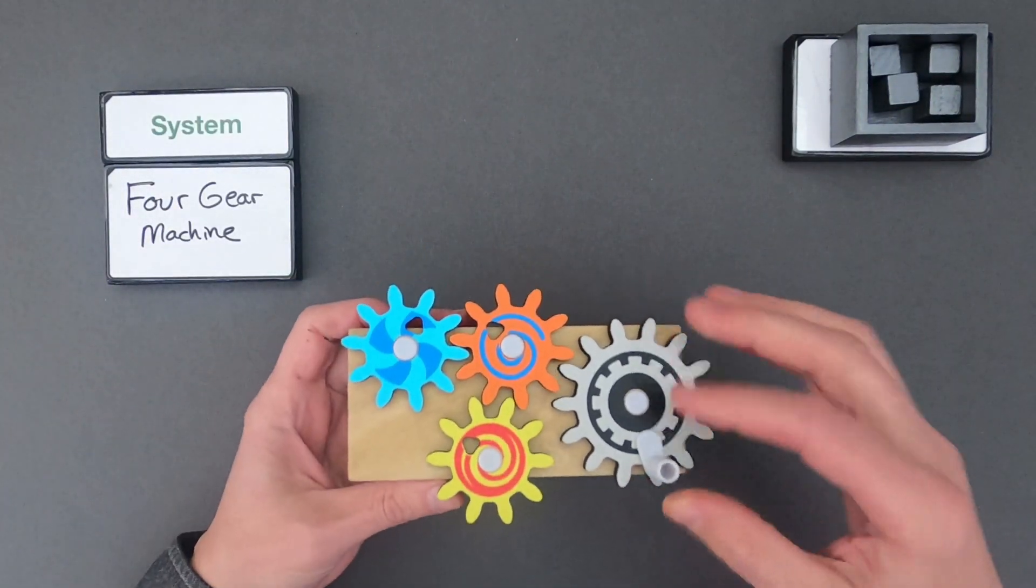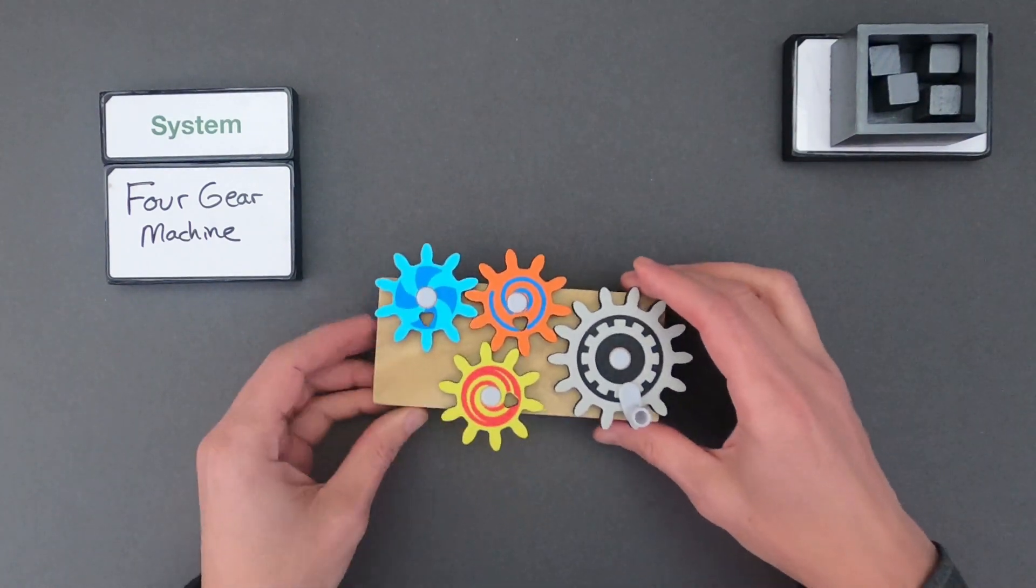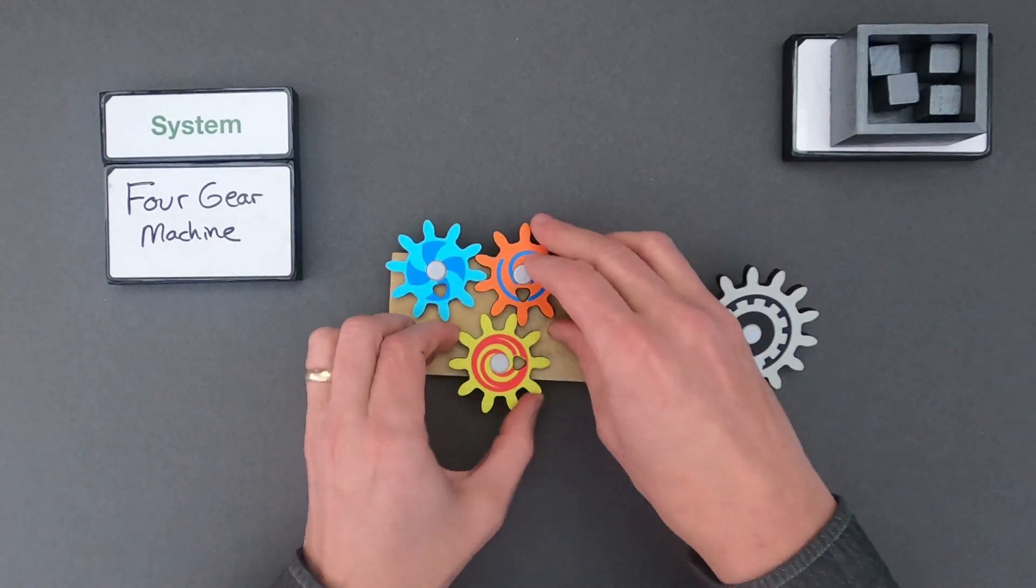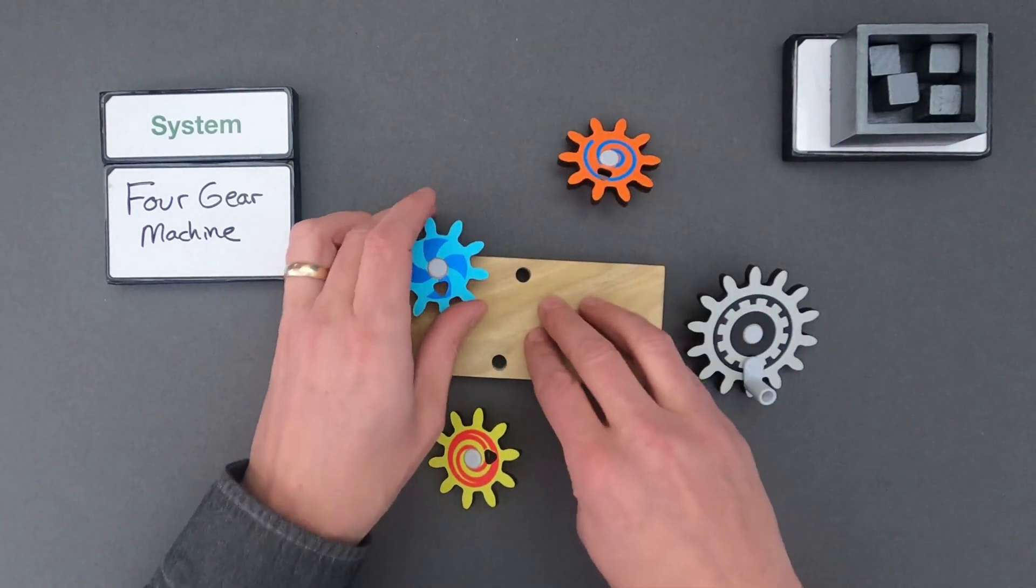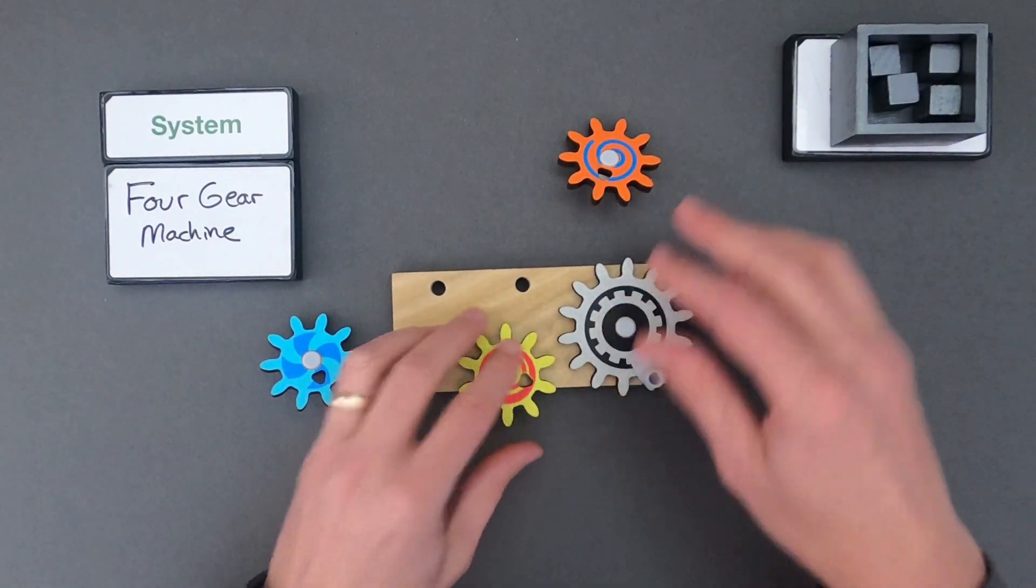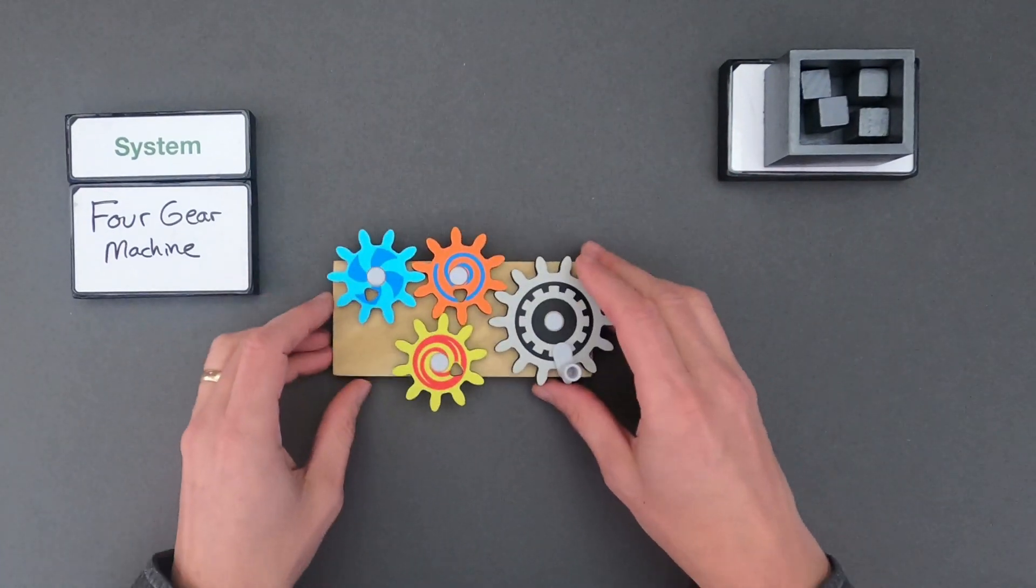Next thing you should do is play with the system and make sure you fully understand the system. So I think I understand how this works. What's great about this one is I can take it apart. So there are, let's see, five different parts to this system. There's the board, and then there's going to be the different gears, and then they're going to work together. So let me list all the parts of the system.